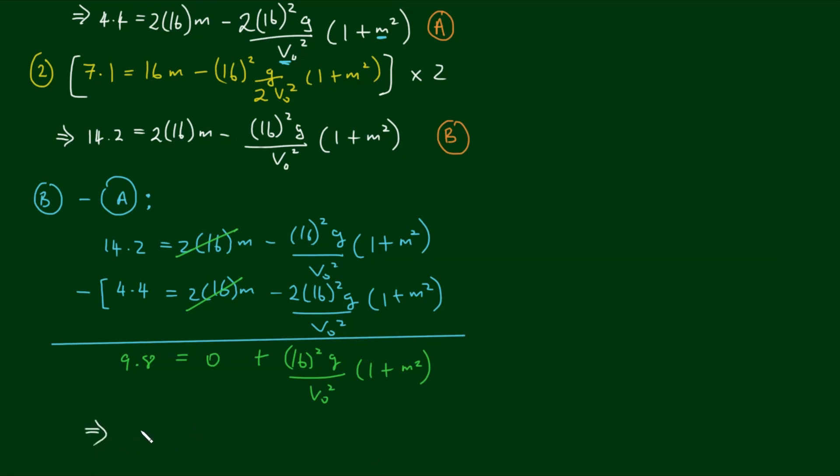Rearranging this, if we make v0 squared the subject, we have v0 squared equals 16 squared g times 1 plus m squared all over 9.8. So we now have an expression for the initial velocity as a function of m or theta.